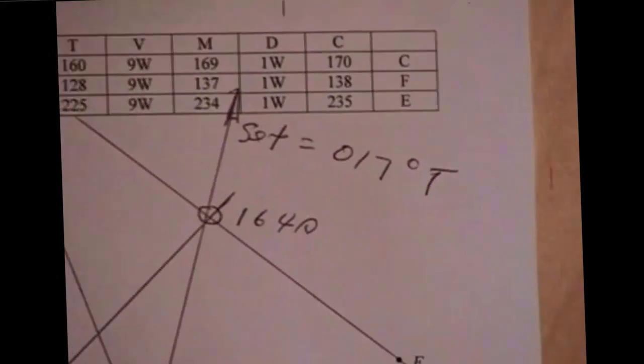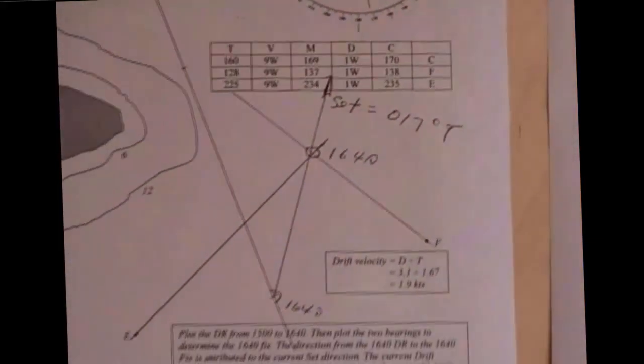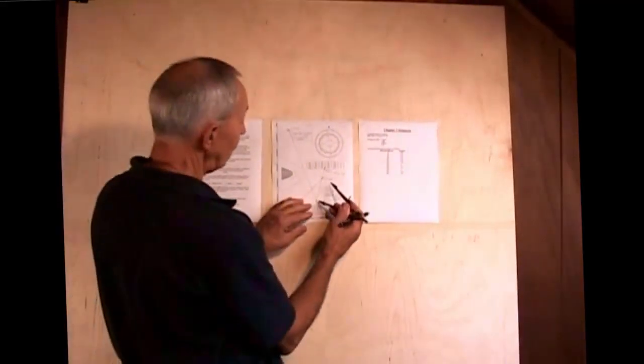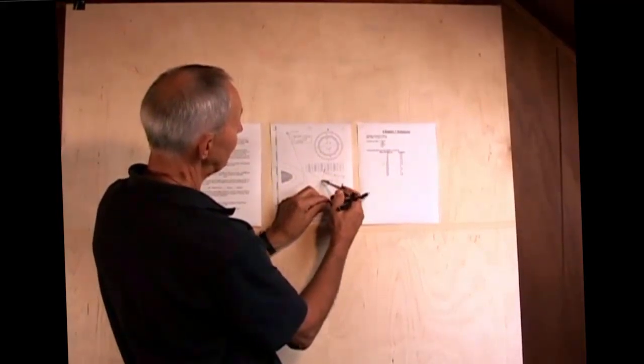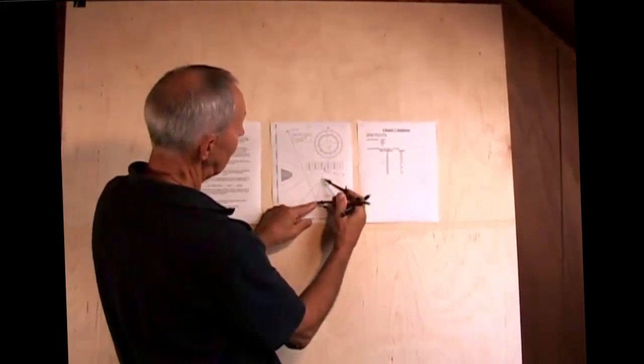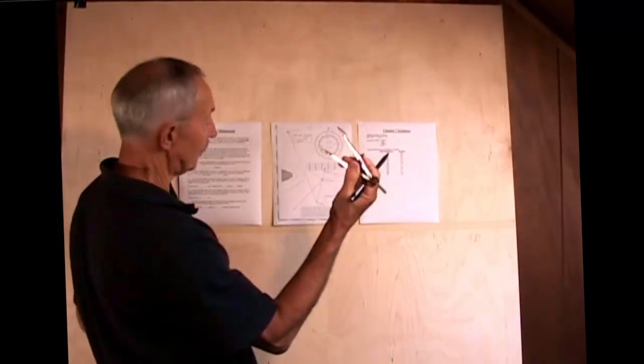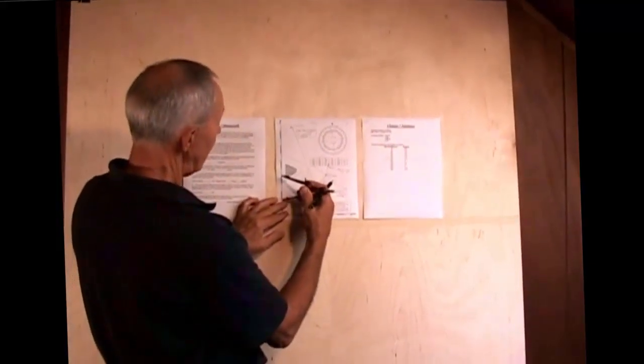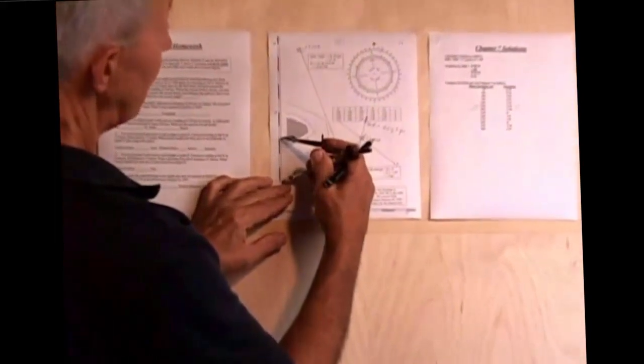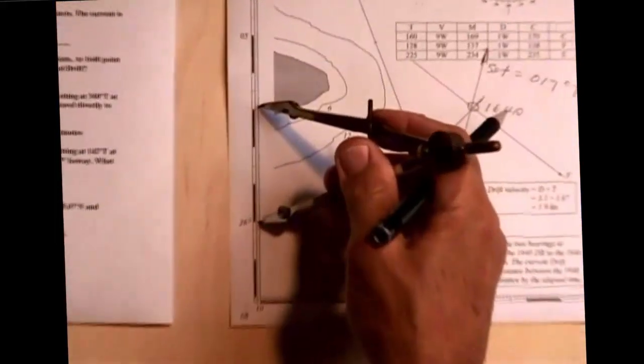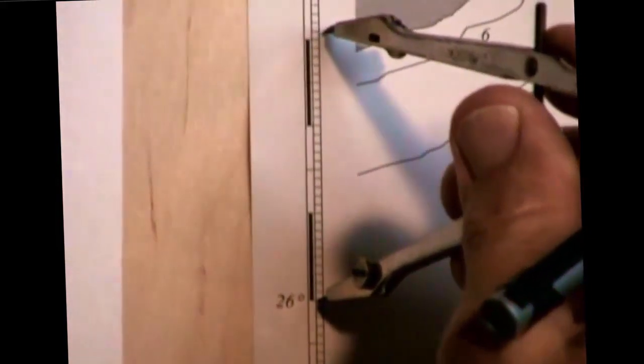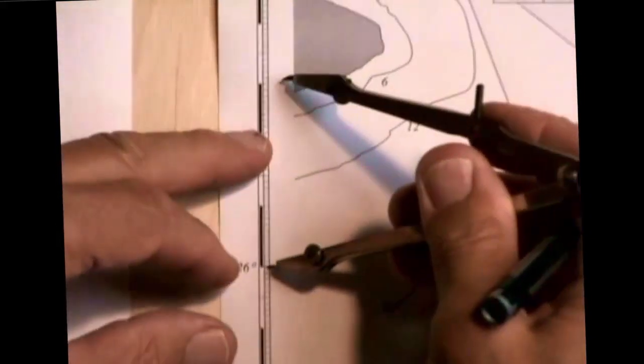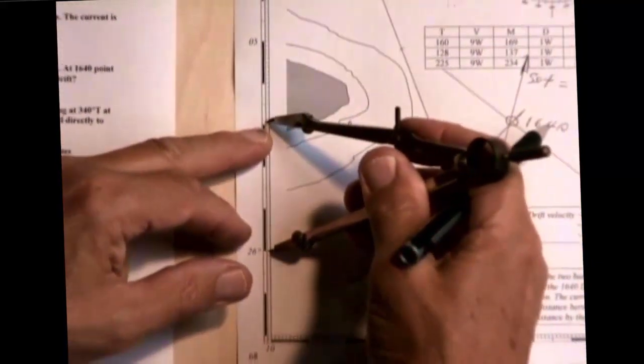The next question is, what was the speed of the current? In order to get the speed, I have to measure the distance that the current pushed us during that period of time. The current pushed us from the DR to the fix, that distance. I come over here and I measure that distance, and I find that it's 3.1 nautical miles. Here's 1, 2, 3.1.